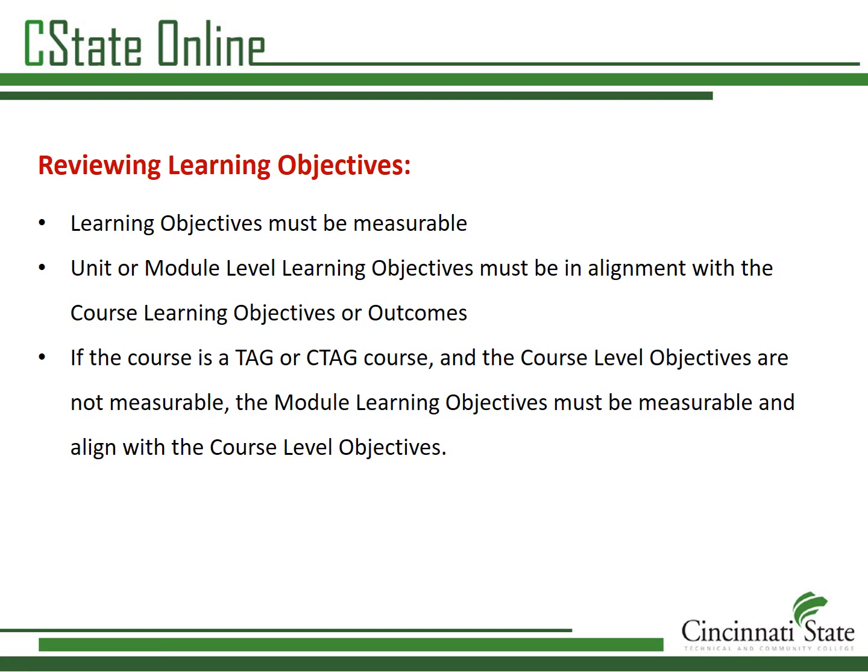Please note, if the course is a TAG or CTAG course, the learning objectives cannot be changed, even, unfortunately, if they are not measurable. Specific Review standard 3.1 accounts for this and states that if the objectives or competencies are institutionally mandated, consider the module unit objectives or competencies to assess whether the course meets standard 3.1. A good first step to checking the learning objectives is to copy and paste all of them into a Word document so you can see the course level and module level objectives in one place. And by the way, if the course does not have module level learning objectives, the review must be halted and the course developer will be asked to add them before the review can continue.